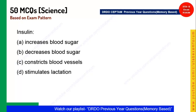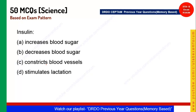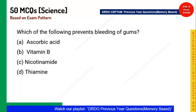Next question: Insulin is used in treating diabetes. What is the reason for using insulin? The options are: increases blood sugar, decreases blood sugar, constricts blood vessels, stimulates lactation. Insulin is used in diabetics to decrease blood sugar. Option B is the correct answer.